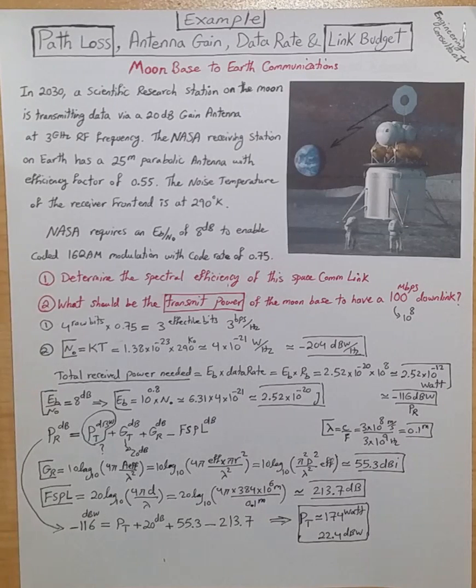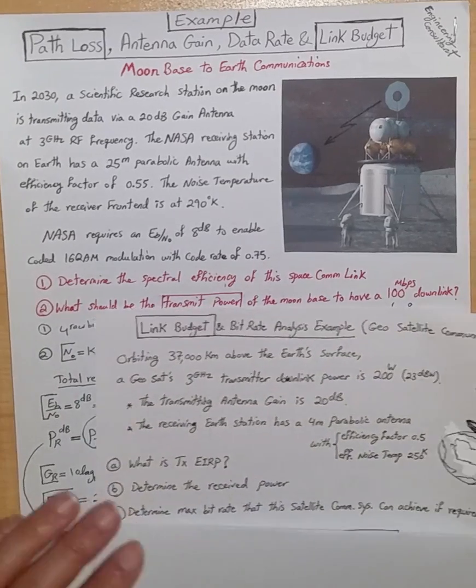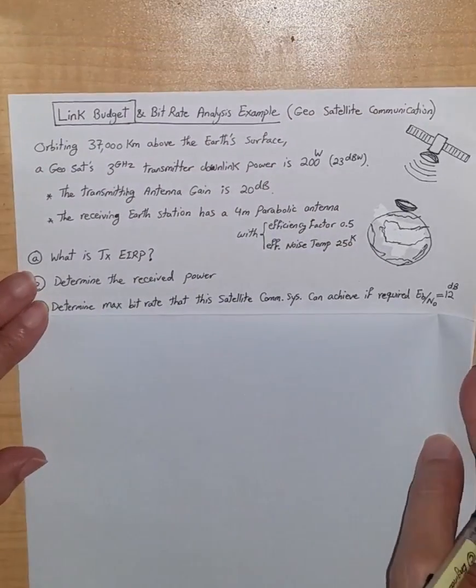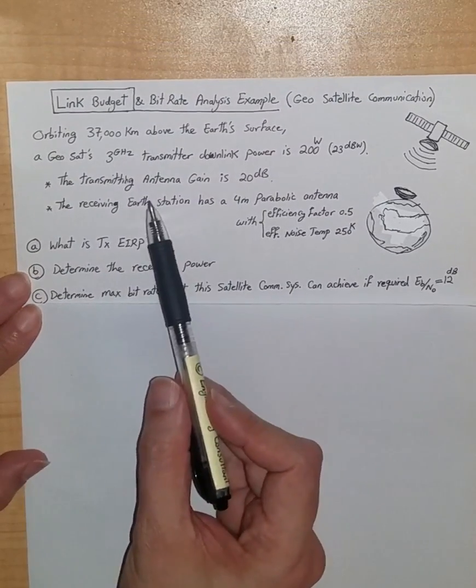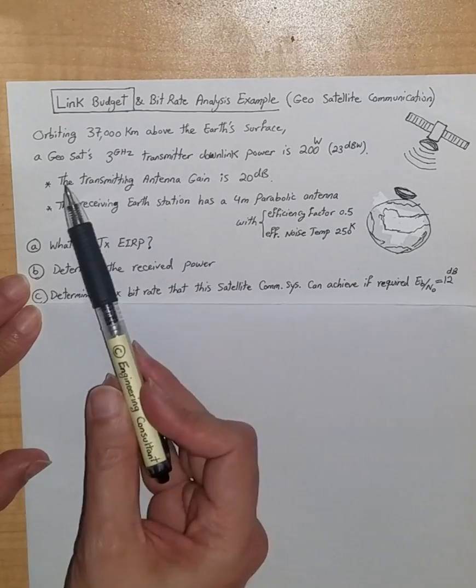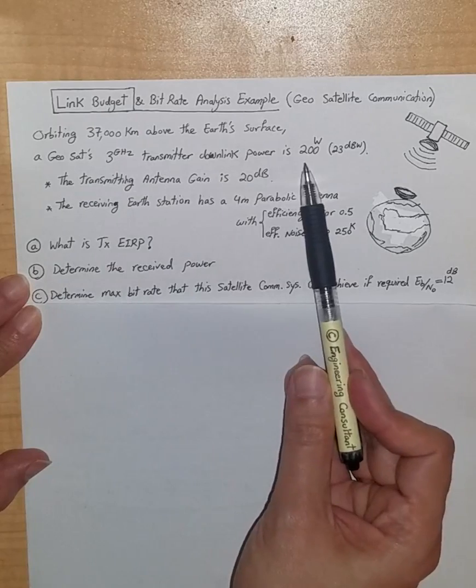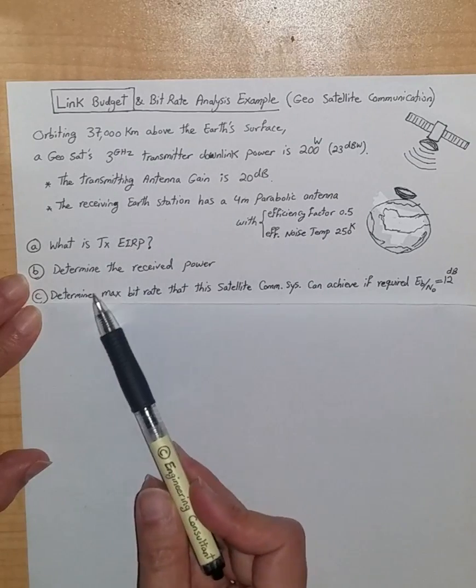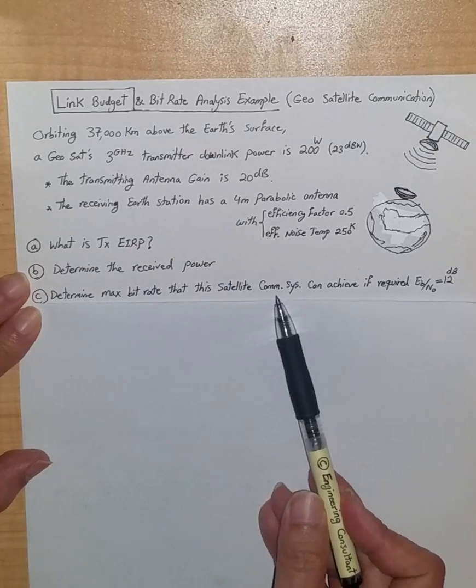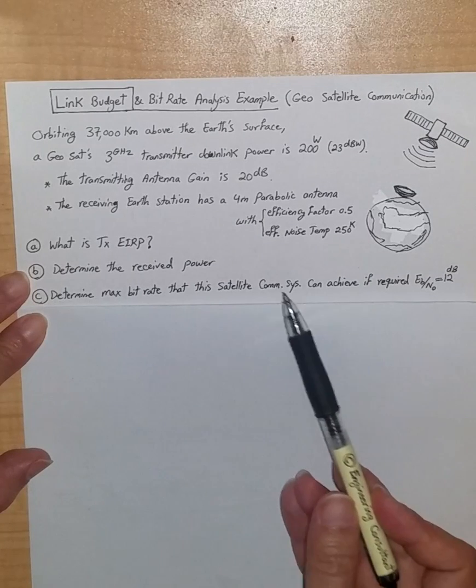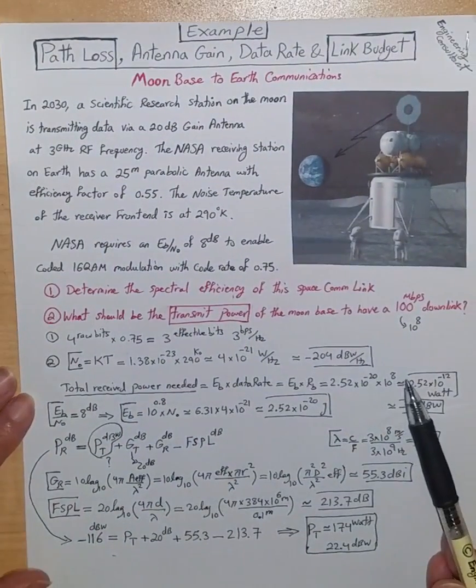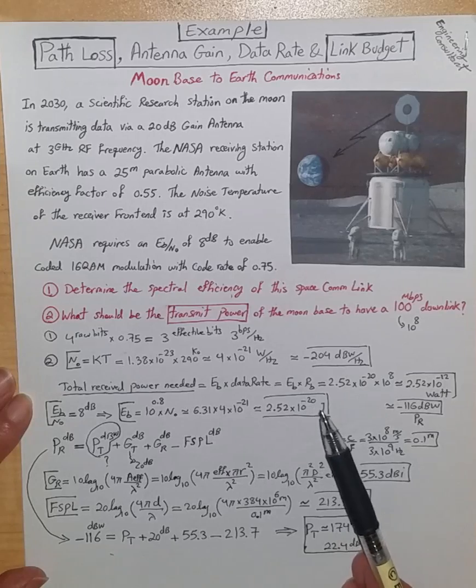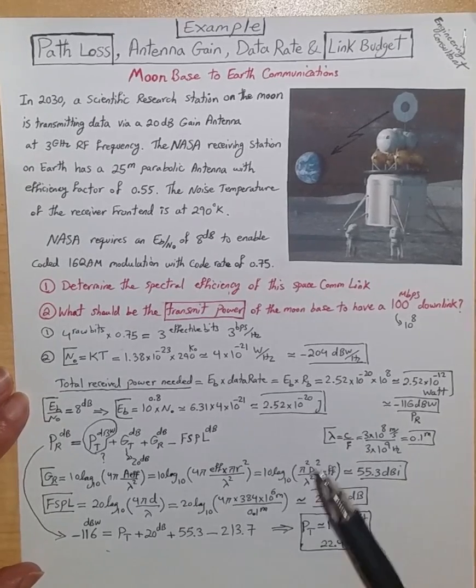Hope you liked this example. If you like, then you might enjoy also another example that I have dealt with in a separate problem. This one is also a link budget bitrate analysis example for geosatellite communication, in which a satellite is orbiting around the Earth at 37,000 km above Earth's surface at 3 GHz frequency with a transmit downlink power of 200 watts. With given information, the question is determining the received power and maximum bitrate of this satellite communication system. I have solved this problem in another video. Hope you liked this video that we just went together for the path loss and antenna gain and data rate and link budget of a moon-based Earth communication scenario. Thank you.